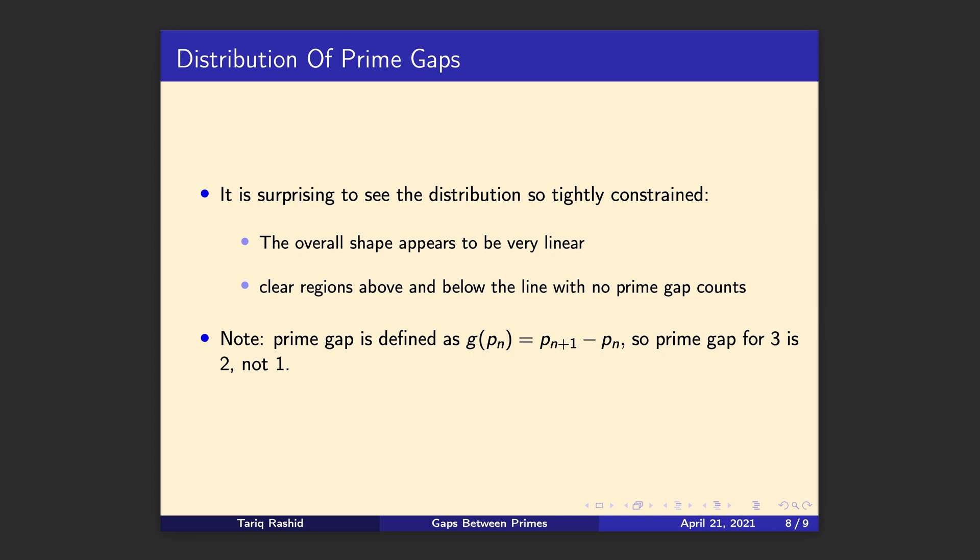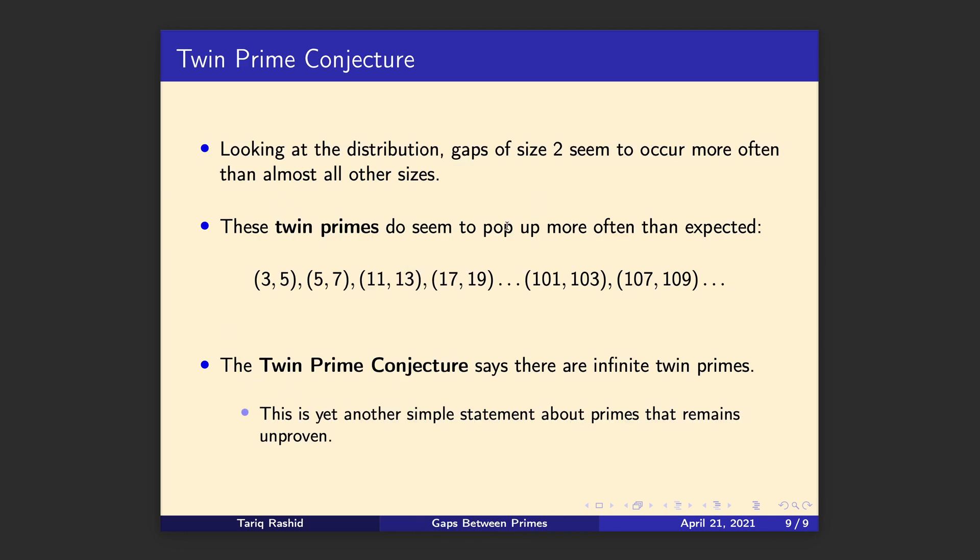And just to clarify, in case you spotted this difference, what we talked about earlier was prime free sequences. And what we're talking about here is prime gaps. And they are the same thing in some sense, but there is an accepted definition that the gap at the nth prime is the difference between the next prime and that prime. So it's the difference between primes. And that doesn't make a big difference, but it means that the gap between 3 and 5 is 2.